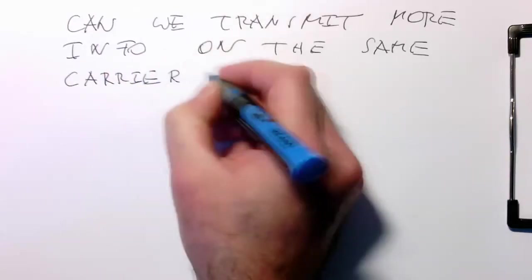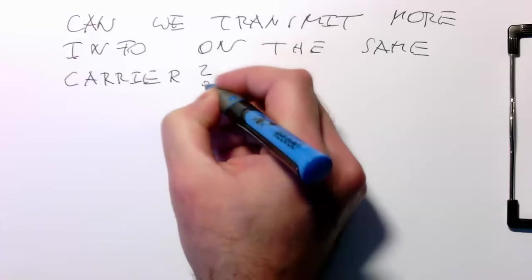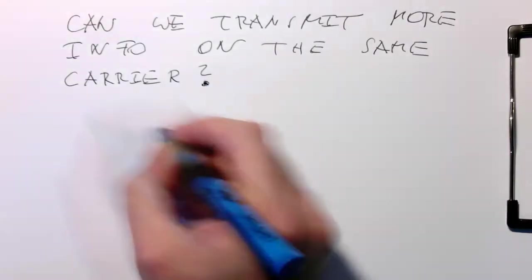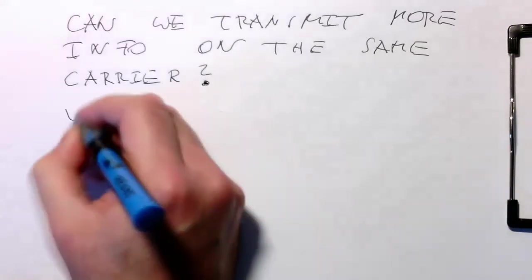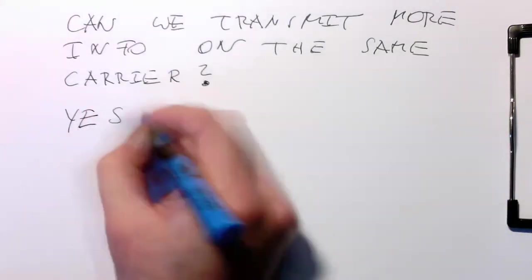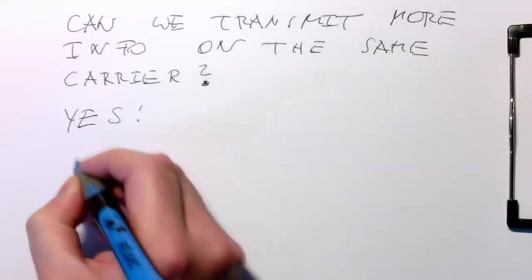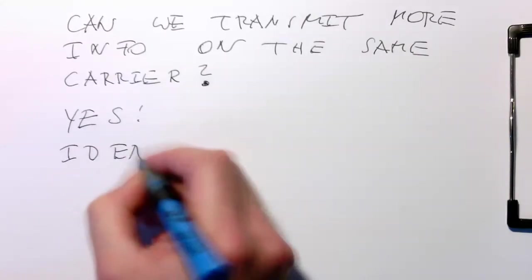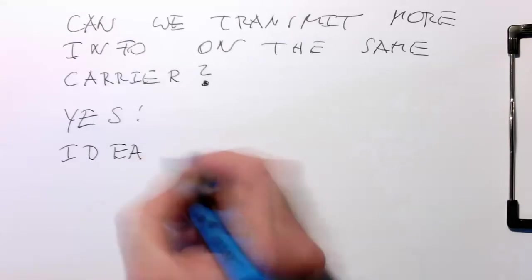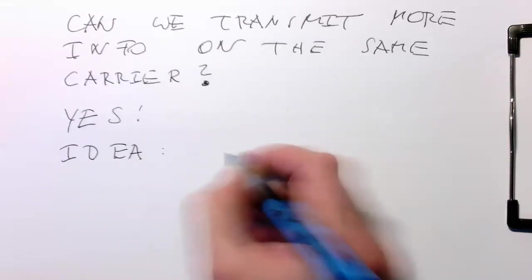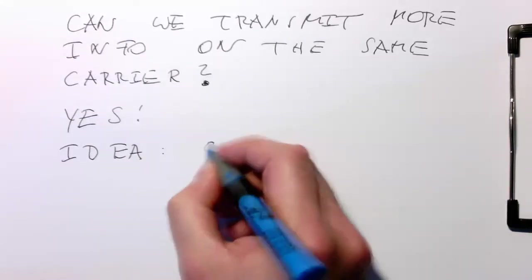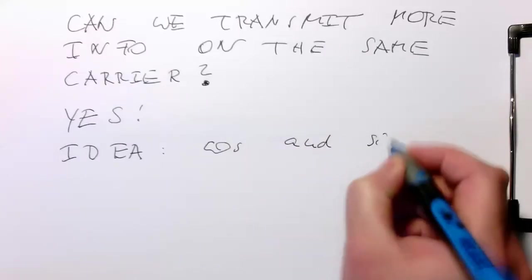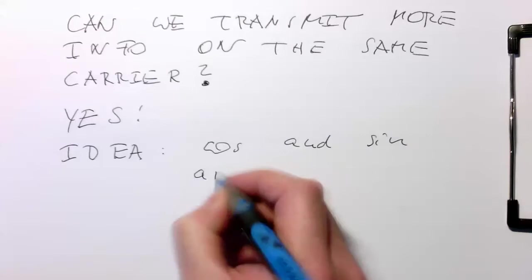So essentially, maybe two bits at the same time and not just one. And the answer to this is yes, we can. And the idea behind this is to transmit more information is that cosine and sine are orthogonal.